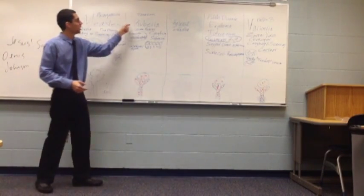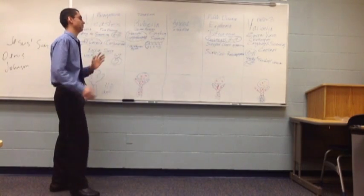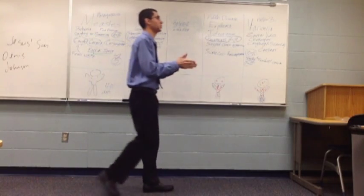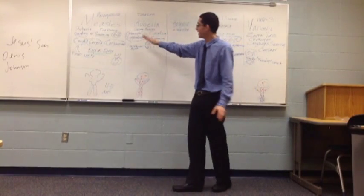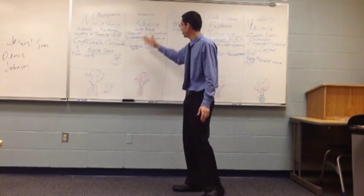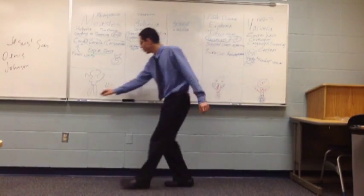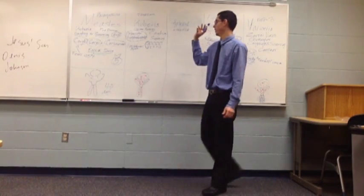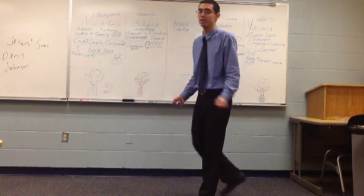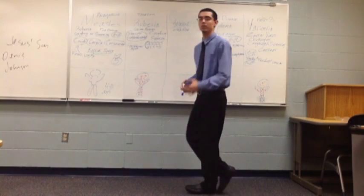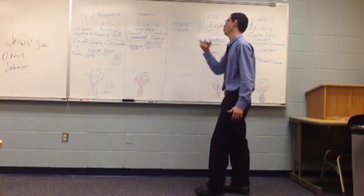One thing very particular about a patient with rubella is that they will have suboccipital lymphadenopathy. This is very characteristic for this disease. Another thing you will see in rubella are Forchheimer spots, which are the enanthem for rubella. Forchheimer spots are simply reddish spots on the soft palate of the patient infected with rubella.